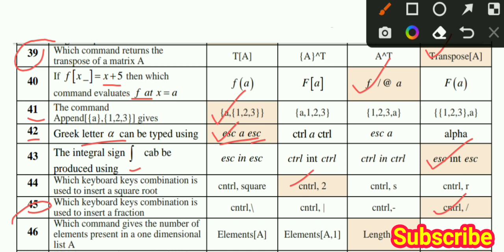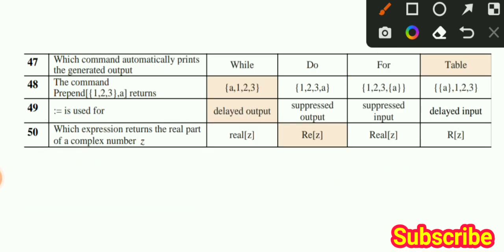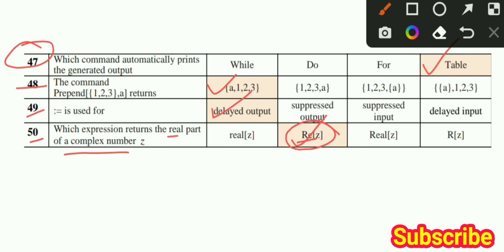MCQ number 46: Option C is the correct option. MCQ number 47: Option D is the correct option. MCQ number 48: Option 1 is correct. MCQ number 49: Option 1 is correct. MCQ number 50: Which expression returns the real part of a complex number z? You use Re[z]. All 50 MCQs are now complete for the GC Main Campus Computing Tools for Mathematics - Mathematica paper.